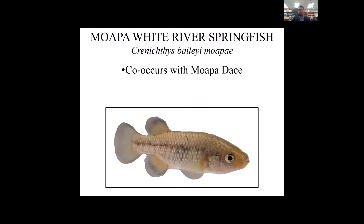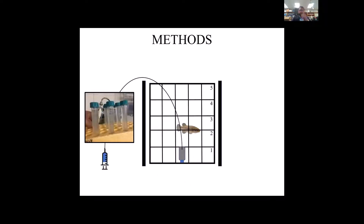The springfish were co-occurring with Moapa dace, and they have co-persisted with invasive species. To test this, our setup is as follows. We used a 37-liter aquarium with an air stone and non-transparent dividers on each side.